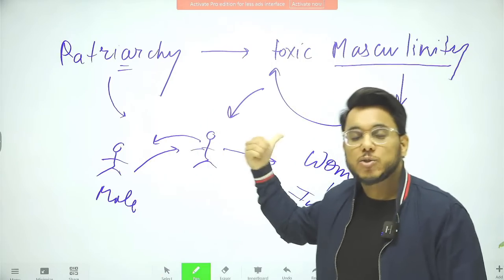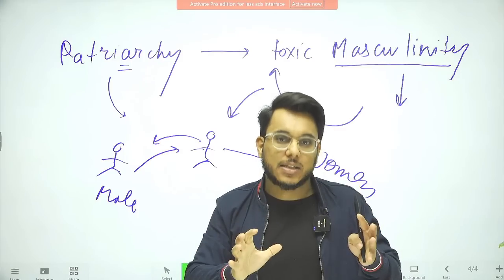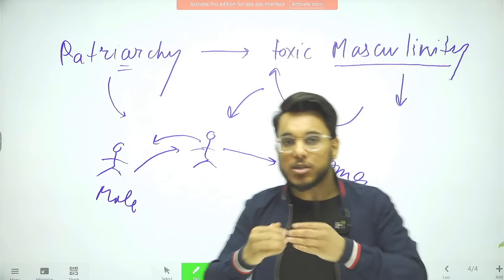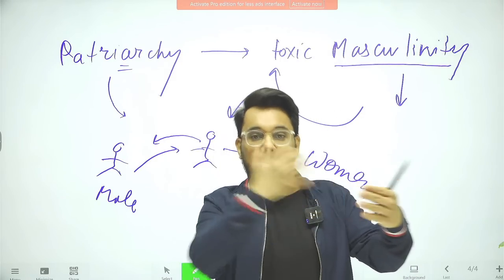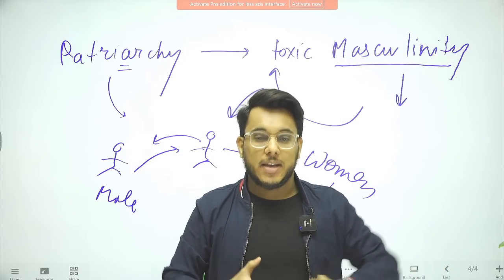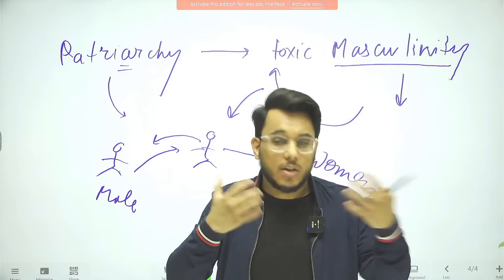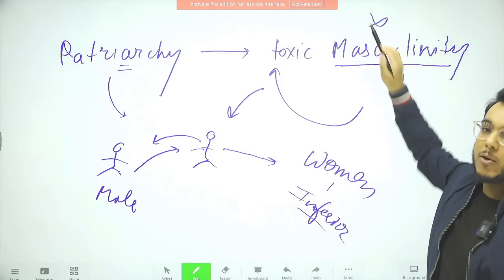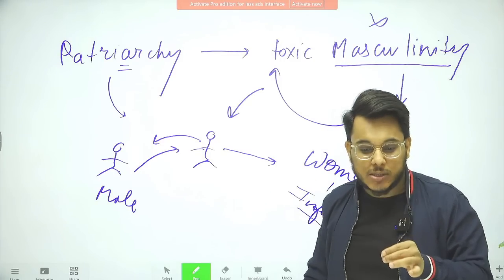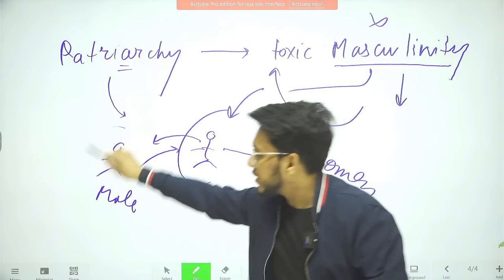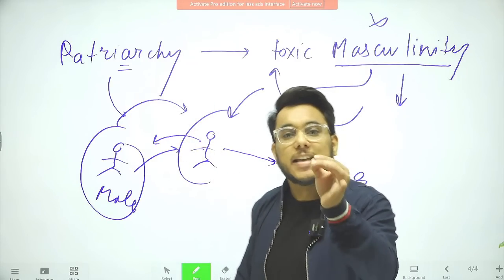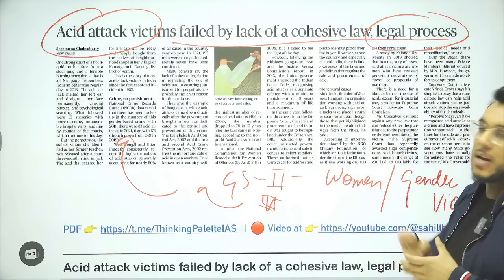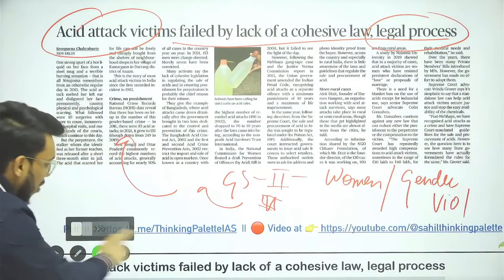Acid attacks also happen under the guise of toxic masculinity. More than 90% of acid attacks happen because a girl has turned down a sexual favor or romantic advance from a male. When women turn down men, it hurts the male ego, and the toxic masculinity leads to attacking women. According to National Crime Records Bureau data, acid attack cases are on the rise: in 2011 there were around 83 cases, rising to 249 in 2019, and 176 in 2021. Majority of cases come from Uttar Pradesh and West Bengal.